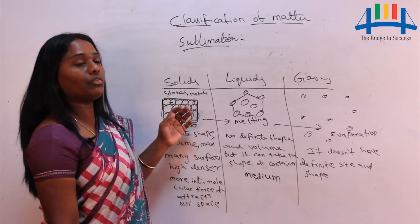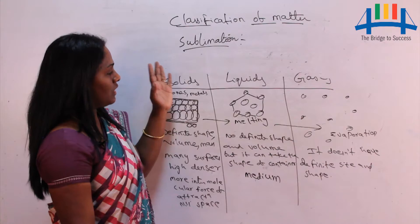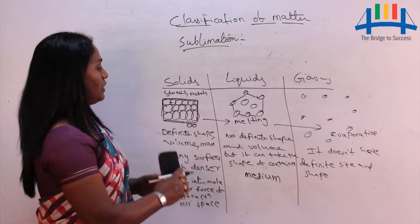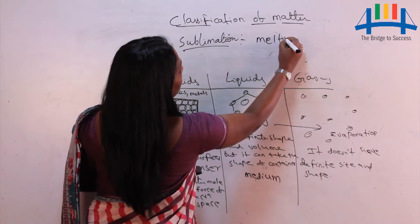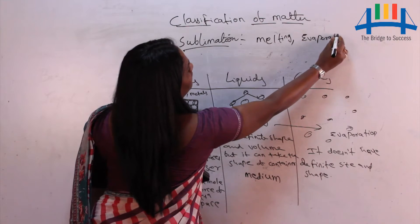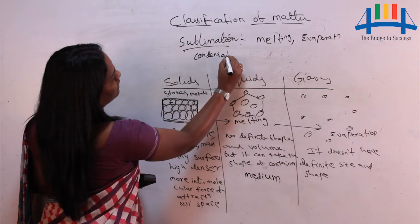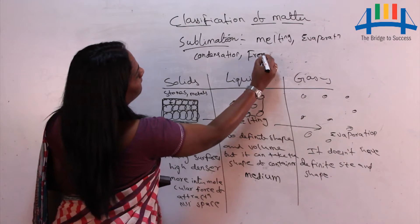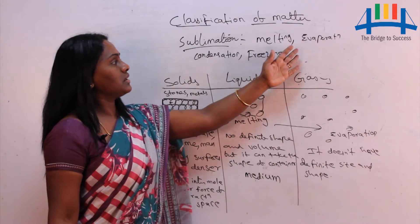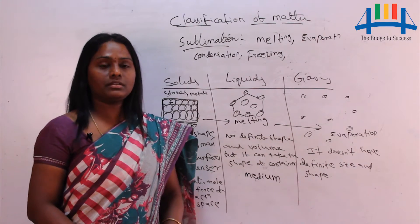Sublimation can also be observed with naphthalene balls and camphor. All these phase transitions — melting, evaporation, condensation, freezing, and sublimation — are called interconversion of matter. With this, I will end my topic. Thank you.